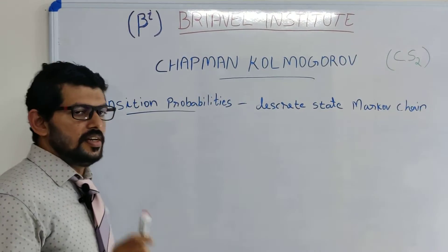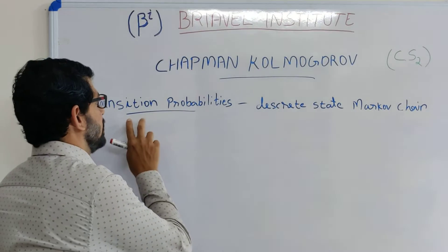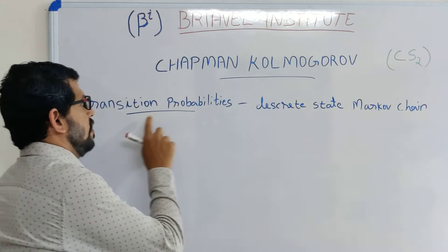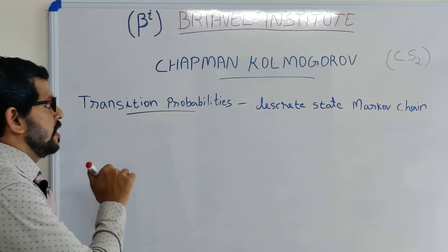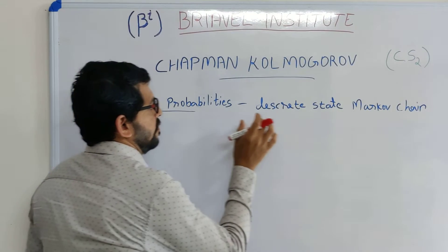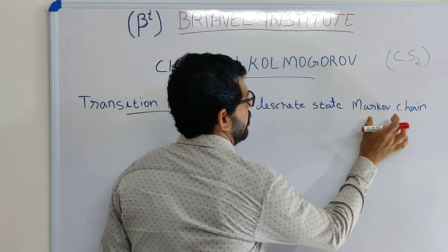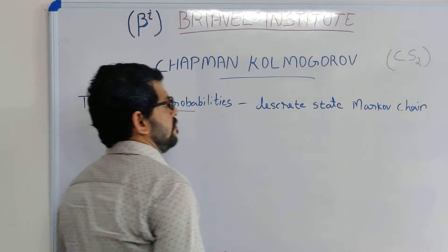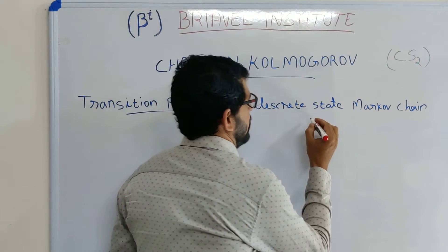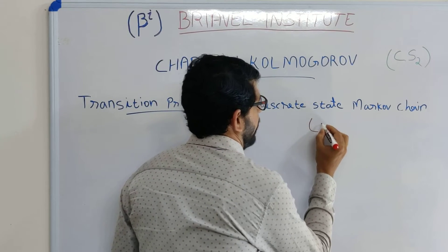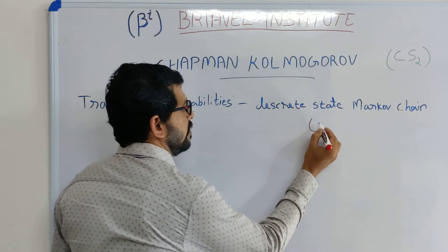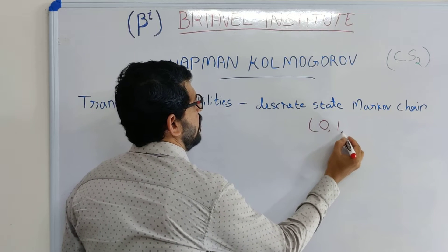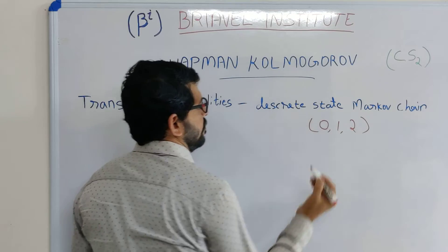Initially, we are considering what transition probabilities are. For transition probabilities, we take a discrete state Markov chain. Discrete state means the state space will always be values like zero, one, two, and so on.